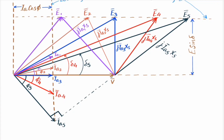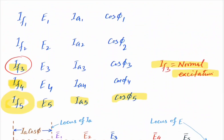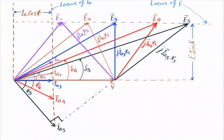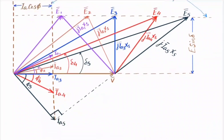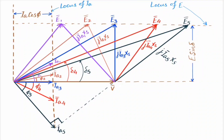For all five field excitations If1 through If5, with corresponding armature currents Ia1–Ia5 and excitation EMFs E1–E5, Ia always lies on the locus line such that Ia·cosφ remains constant: Ia1·cosφ1 = Ia2·cosφ2 = Ia3·cosφ3 (where cosφ3 = 1, i.e., φ3 = 0) = Ia4·cosφ4 = Ia5·cosφ5. All five excitation EMFs E1–E5 lie on the locus line for E, satisfying the condition E·sinδ = constant.